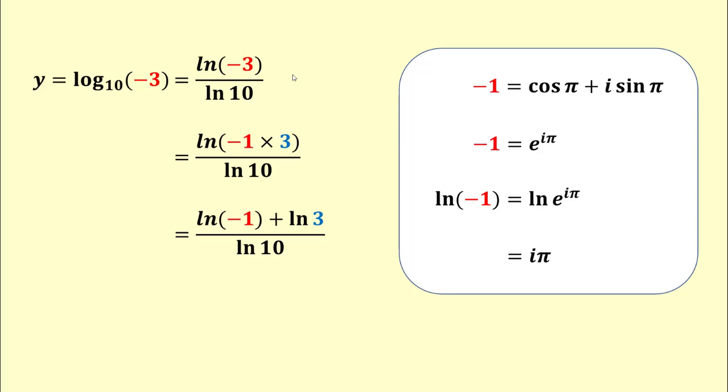If we substitute the value of the natural log of negative 1, we get y equals the sum of i pi and the natural log of 3 upon natural log of 10. This implies y is an imaginary number, which is often called complex number.